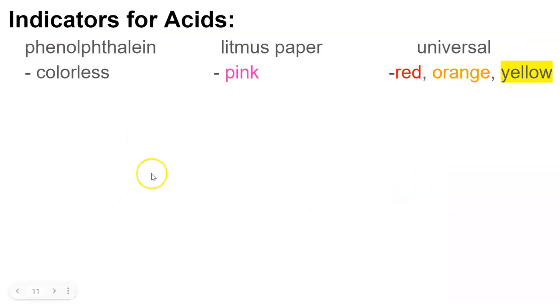So now that we've talked about acids and bases, let's talk about the indicators. How can we tell whether a substance is an acid or base? There are some indicators we can use: phenolphthalein, litmus paper, and universal pH paper. Phenolphthalein will turn colorless in the presence of an acid. Litmus paper will turn pink, and universal indicators are red, orange, or yellow. Those are the yellow papers that you dip into the solution, and then you compare it to the number on the card.